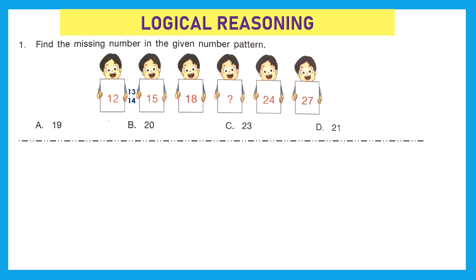Now let's see the pattern for the next one. 15, jump to 16, 17, and then reach 18. Jump to 19, 20, and then we reach 21. So on the question mark, the number 21 should be there. Let's complete the pattern to confirm: 21, jump 3 gives 22, 23, 24. Then 25, 26, and we reach 27. So the right answer is option D, 21.